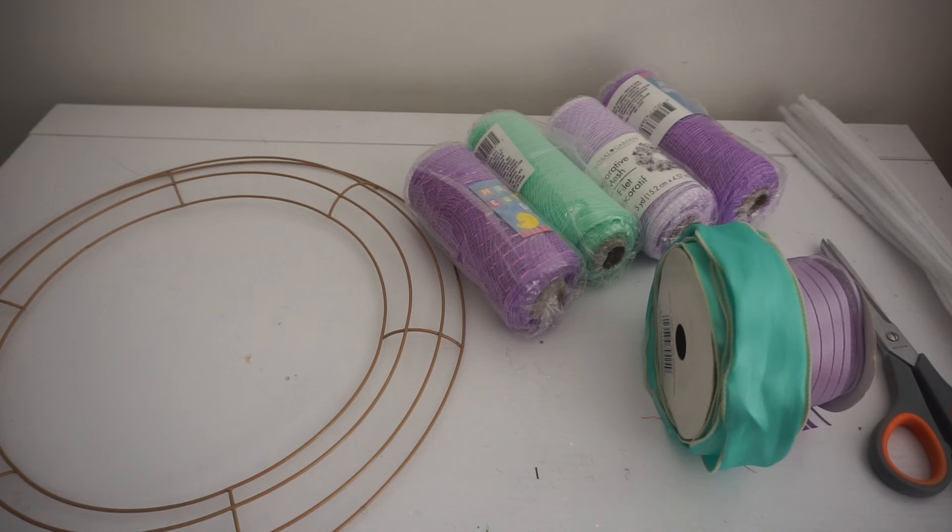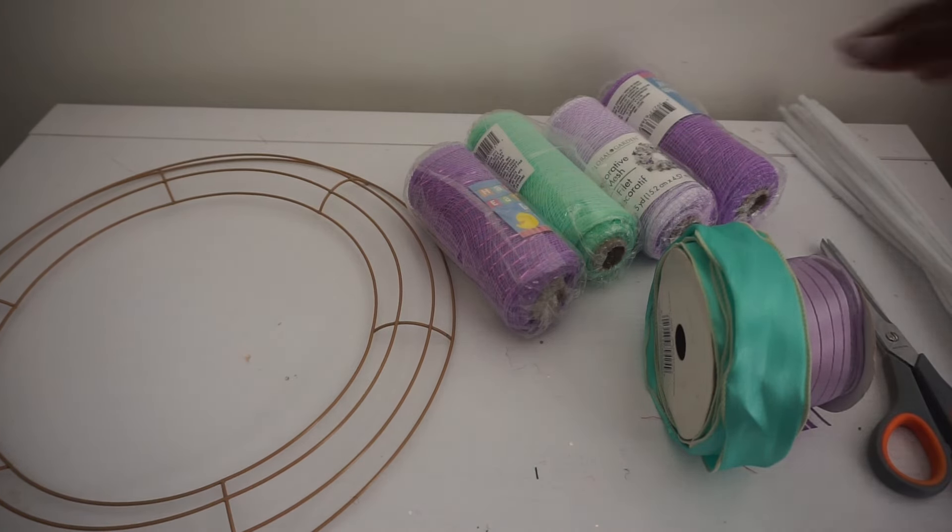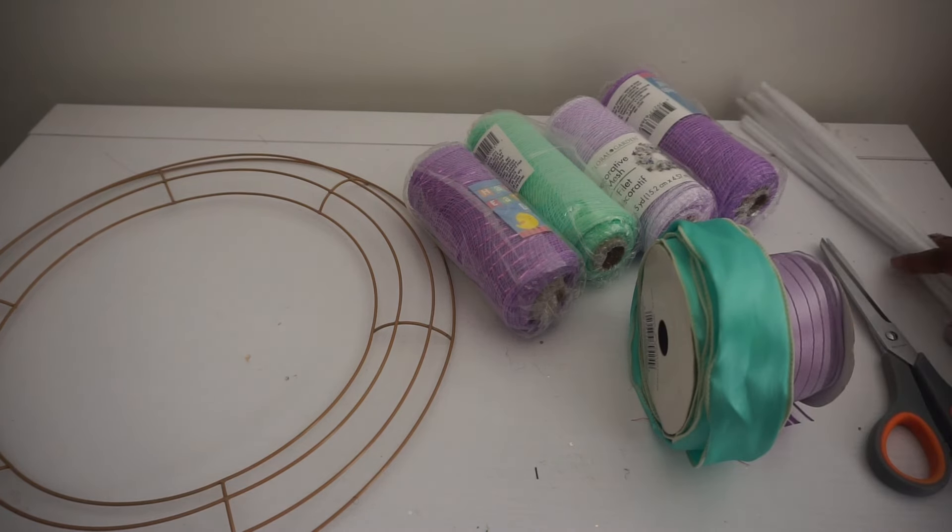Hey guys, today we'll be making an adorable ruffle scrunch Easter deco mesh wreath. What you will need: I have a 14 inch wreath ring, 6 inch deco mesh ribbon, channel stems, and scissors. Alright, let's get started.